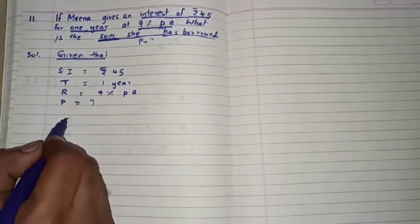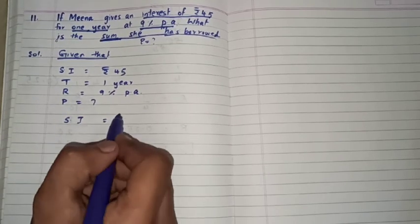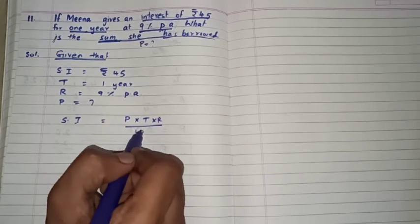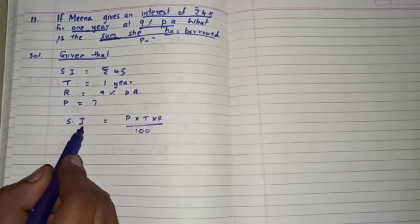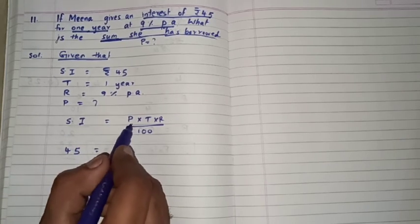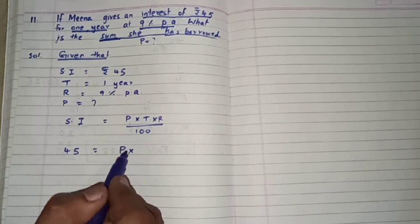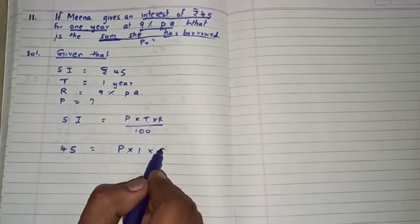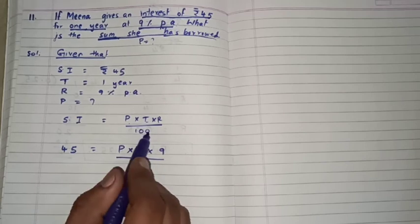To SI is equals to P into T into R by 100. To abh SI ka jaga par kya likhenge hum? 45 rupees is equal to P, principle nahi pata to P likhenge. Time is one year to one, into R is 9 percent per annum to 9 divided by 100.